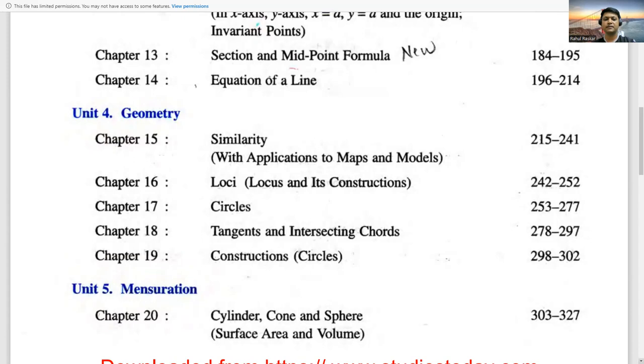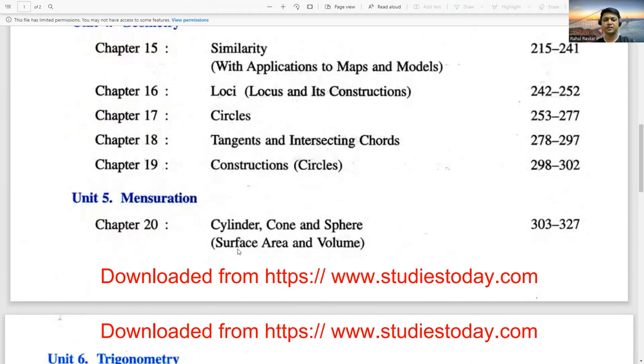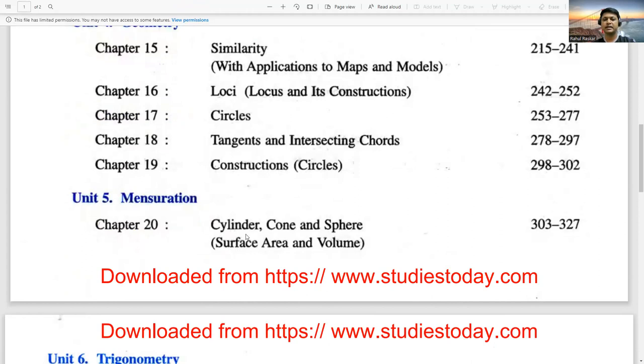Unit 5 has a chapter related to Mensuration. We can see Cylinder, Cone and Sphere, and we can see how to calculate the surface area and volume of these shapes.